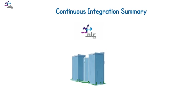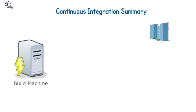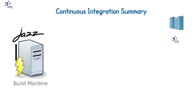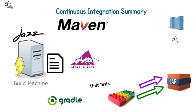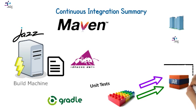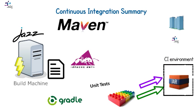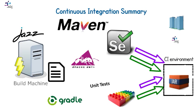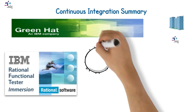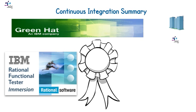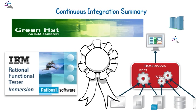In Elm, the build is automated through the JAZZ Build Engine (JBE) and a few build scripts written in Maven, Ant, or Gradle. Unit tests are executed against the just-packaged build. Deployment to the CI environment is also done automatically and Selenium tests are fired into the freshly deployed build. By the way, Elm has just brought in one of the best testing automation tools — IBM Rational Green Hat — which also enables doing testing virtualization and external stub mocking to ease and speed testing.